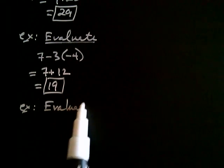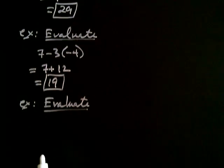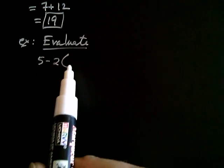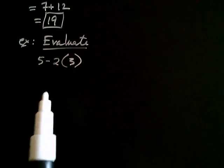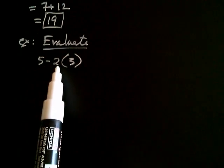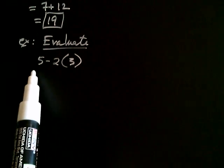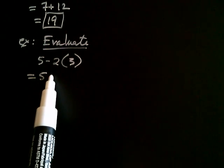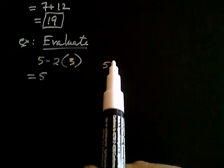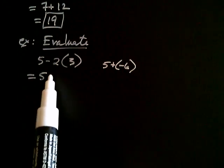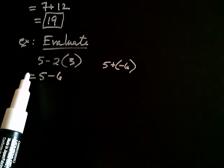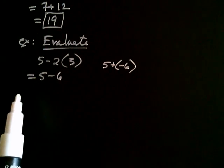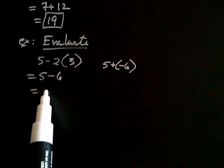Let's evaluate 5 minus 2 times positive 3. The same logic applies: think of the negative as belonging with the 2, so negative 2 times positive 3 is negative 6. We get 5 plus negative 6, which is the same as 5 minus 6, and 5 minus 6 equals negative 1.